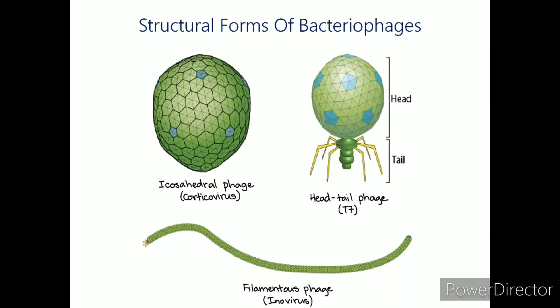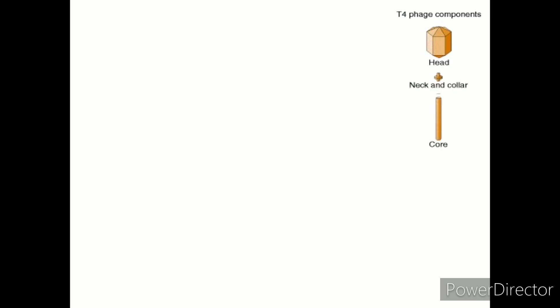Like bacteria, bacteriophages are also classified into different orders and families depending on their morphology and genetic material. A typical T4 phage contains a head, neck and collar, core, sheath, end plate, and fibers.